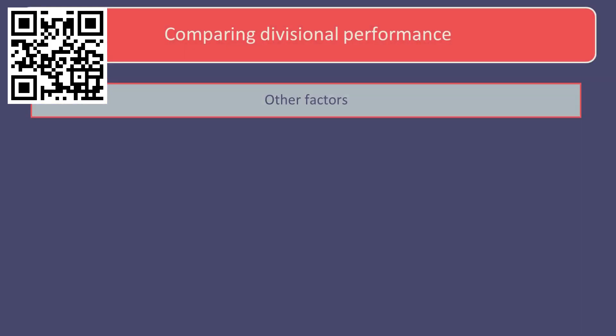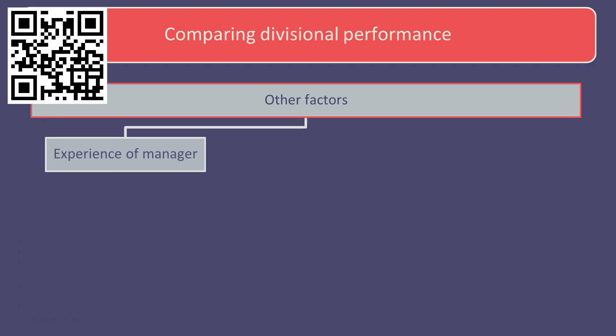Other than the calculations above, other factors need to be considered when evaluating or comparing divisional performance. How experienced is the divisional manager — perhaps they are new to the role? How buoyant, or otherwise, is the market for each division's goods and services? This will impact the financial results of that division.